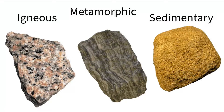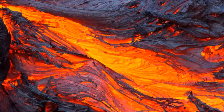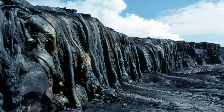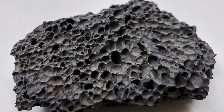First up, igneous rocks. These are new rocks formed from magma in volcanoes. The magma may cool rapidly, giving us extrusive rocks, sometimes called volcanic rock. These often have gas bubbles trapped in the rock because the magma frothed up in the low pressure as it left the inside of the earth.